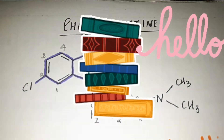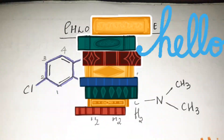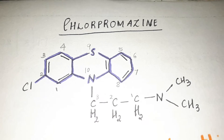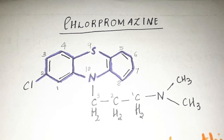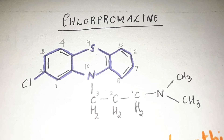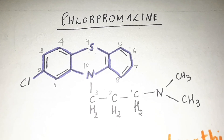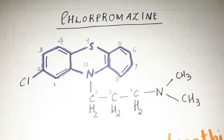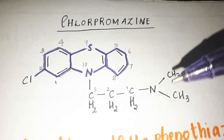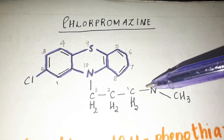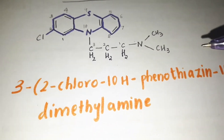Hello everyone, today we'll learn the synthesis of chlorpromazine. It is an antipsychotic drug. I've already explained the classification of antipsychotic drugs — you can check it at the end of this video. This is the structure of chlorpromazine.